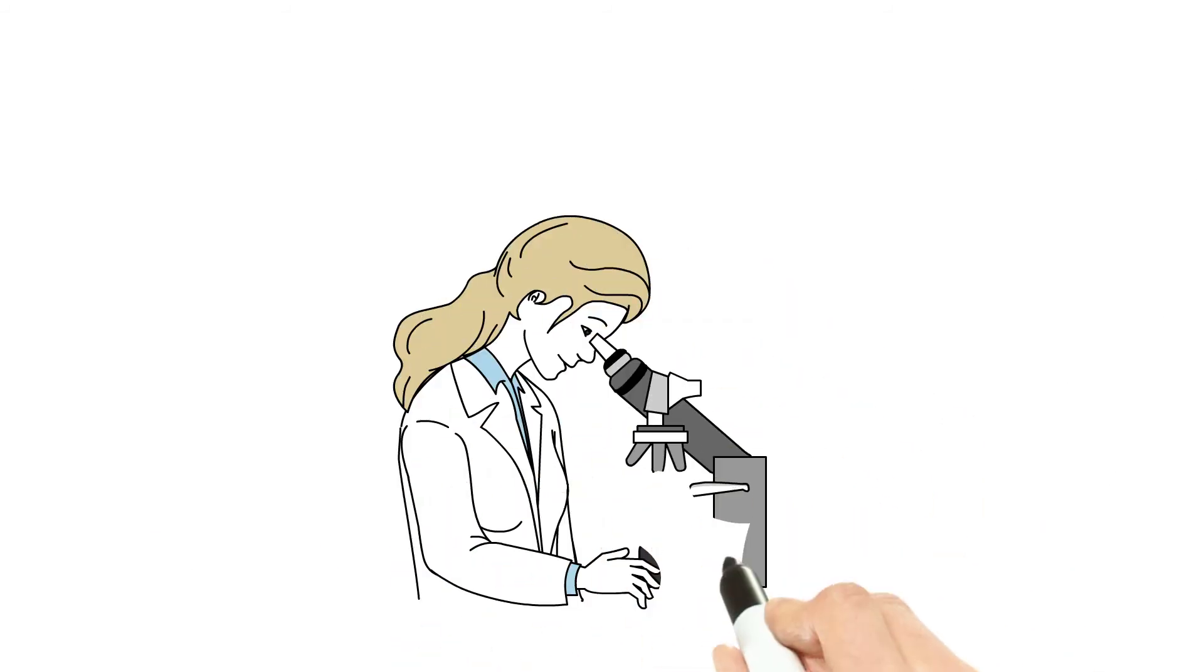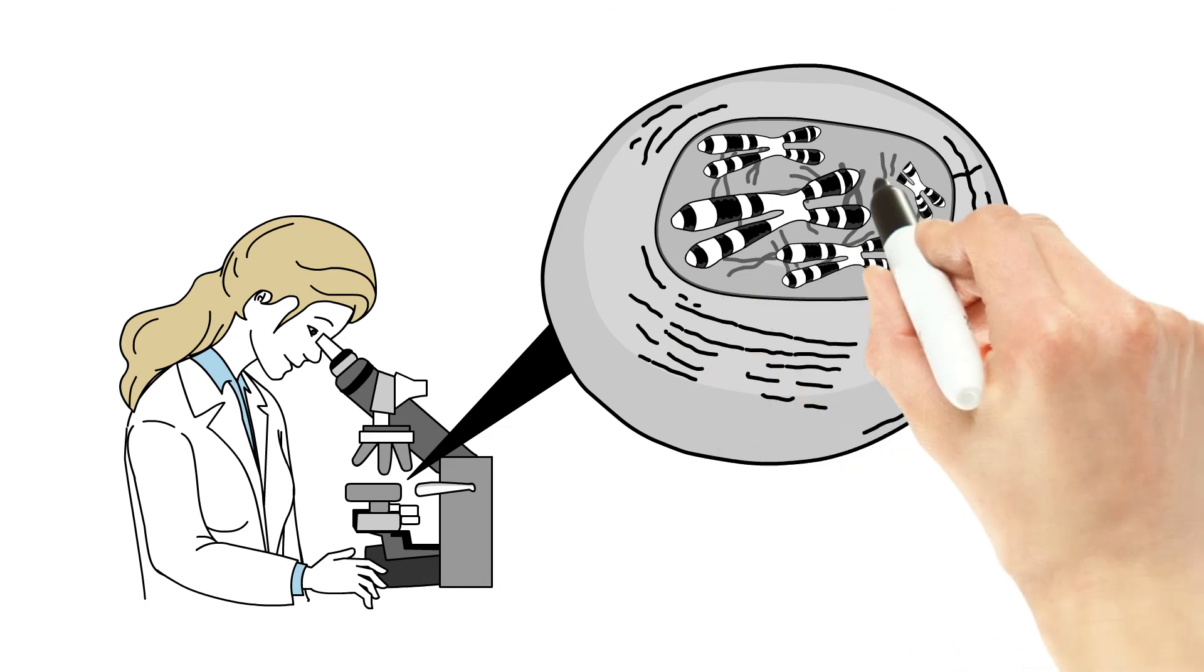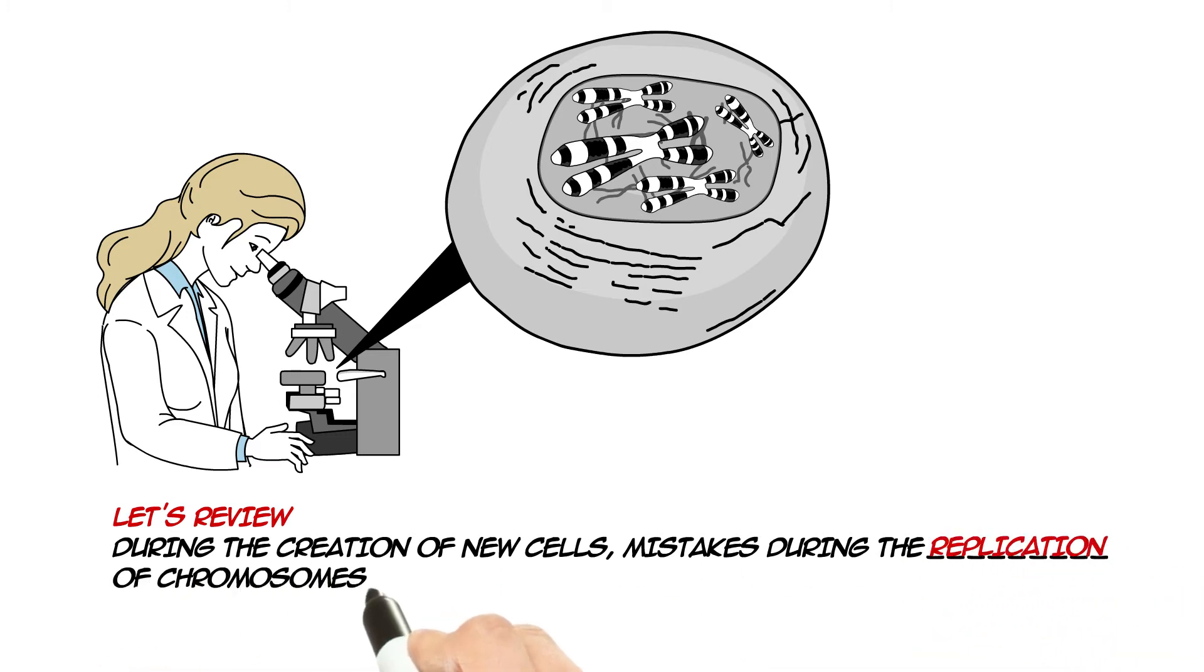When scientists look at the white blood cells of people with CLL, they often find very specific kinds of changes in their chromosomes. Let's take another break to review this process. During the creation of new cells, mistakes during the replication of chromosomes can result in the development of CLL.